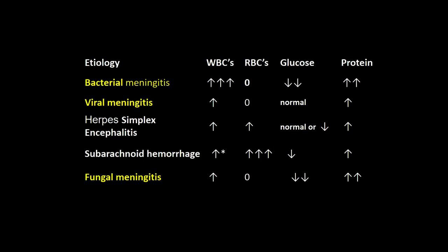Herpes simplex usually produces inflammatory cells. It tends to be destructive to blood vessels with all that inflammation, so you get some leakage of red blood cells into the CSF. Usually the glucose is normal in herpes simplex — please mainly associate low glucose with bacterial or fungal meningitis.